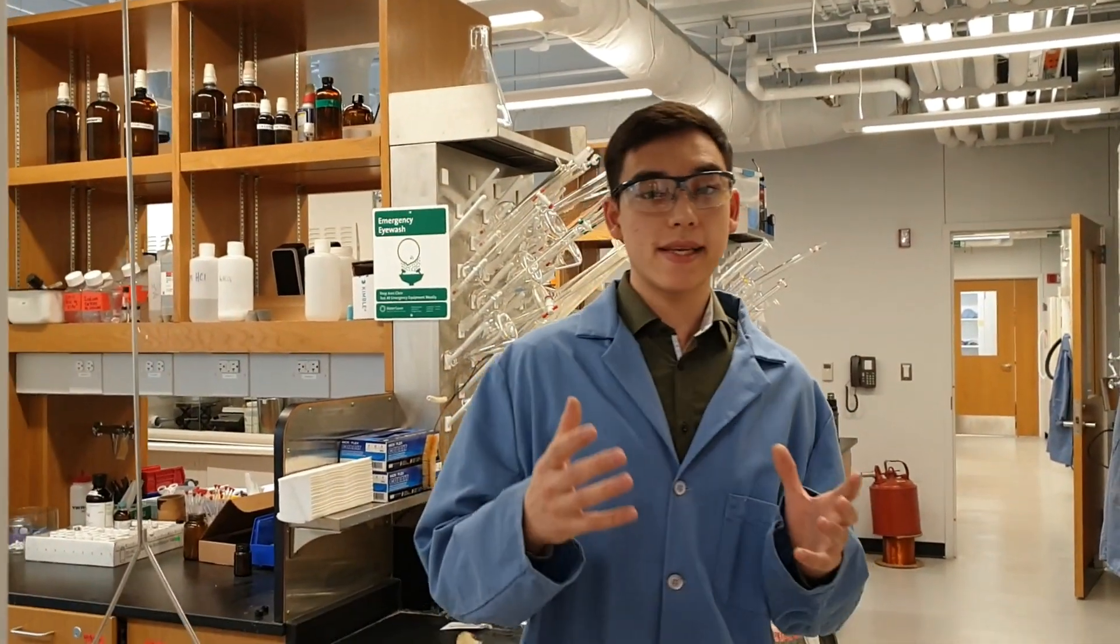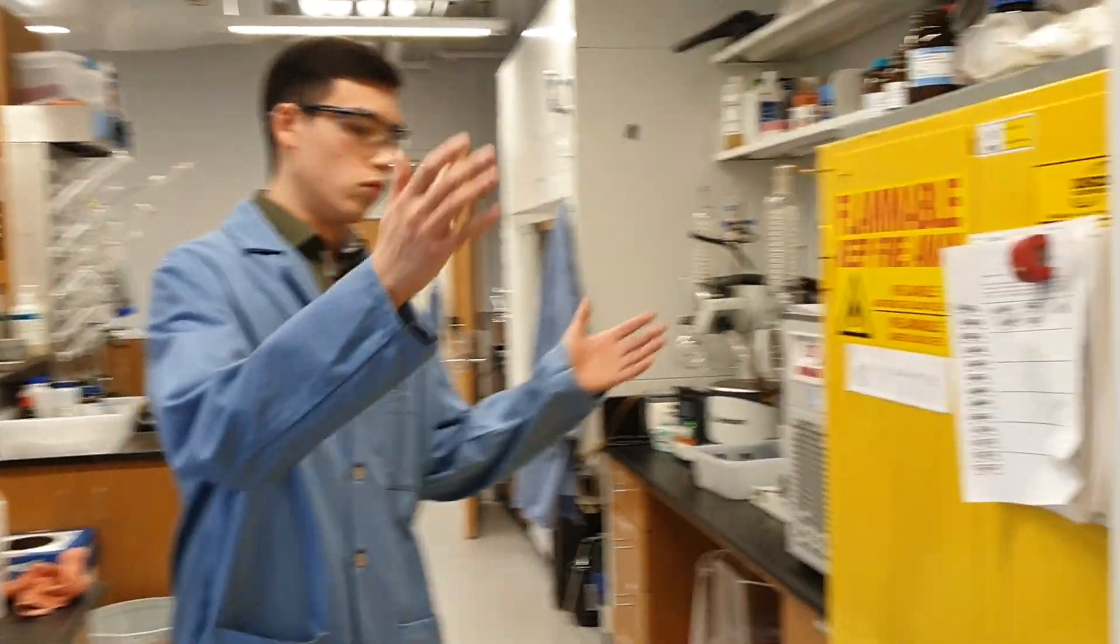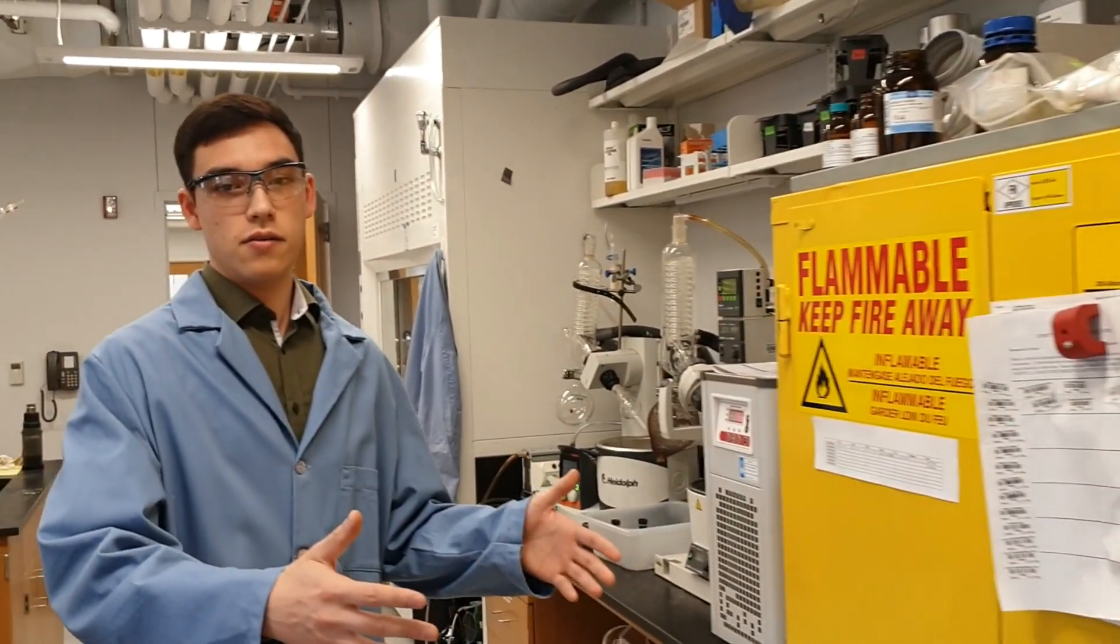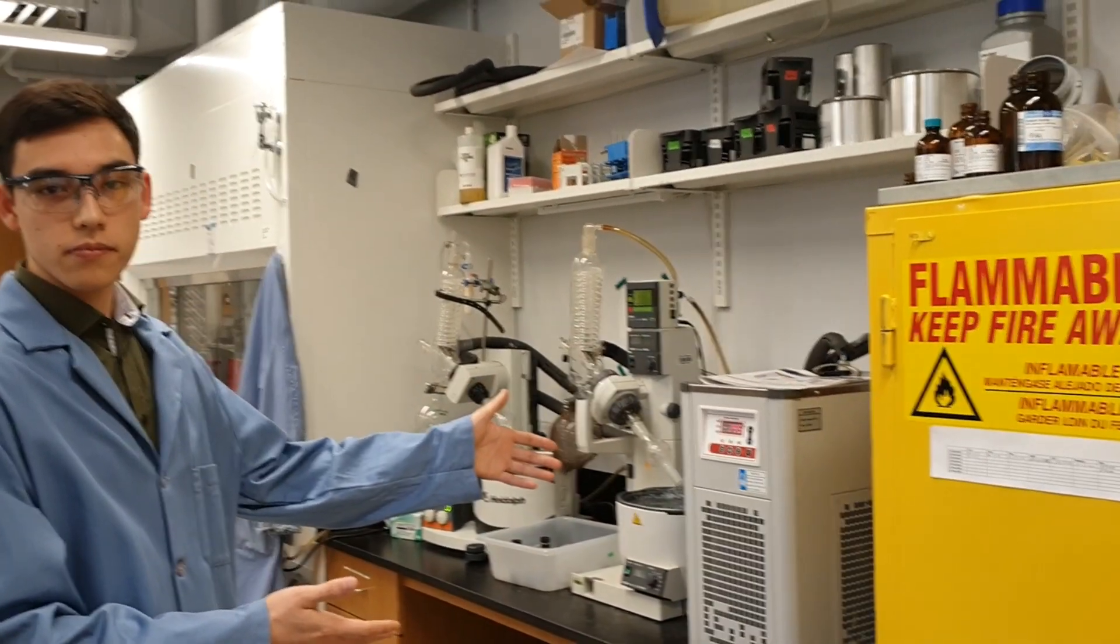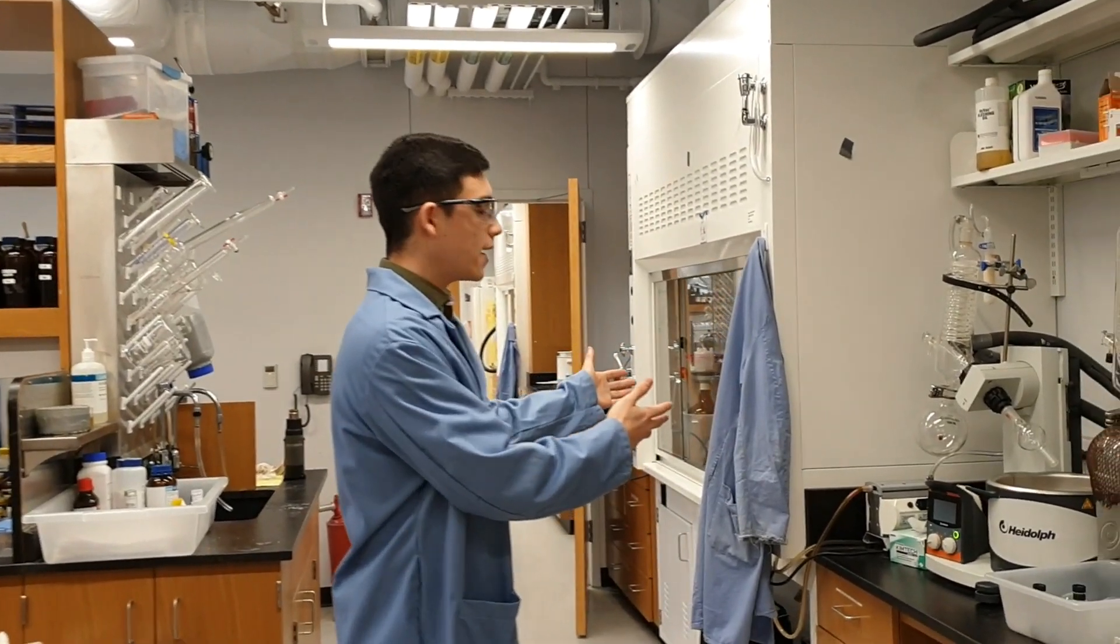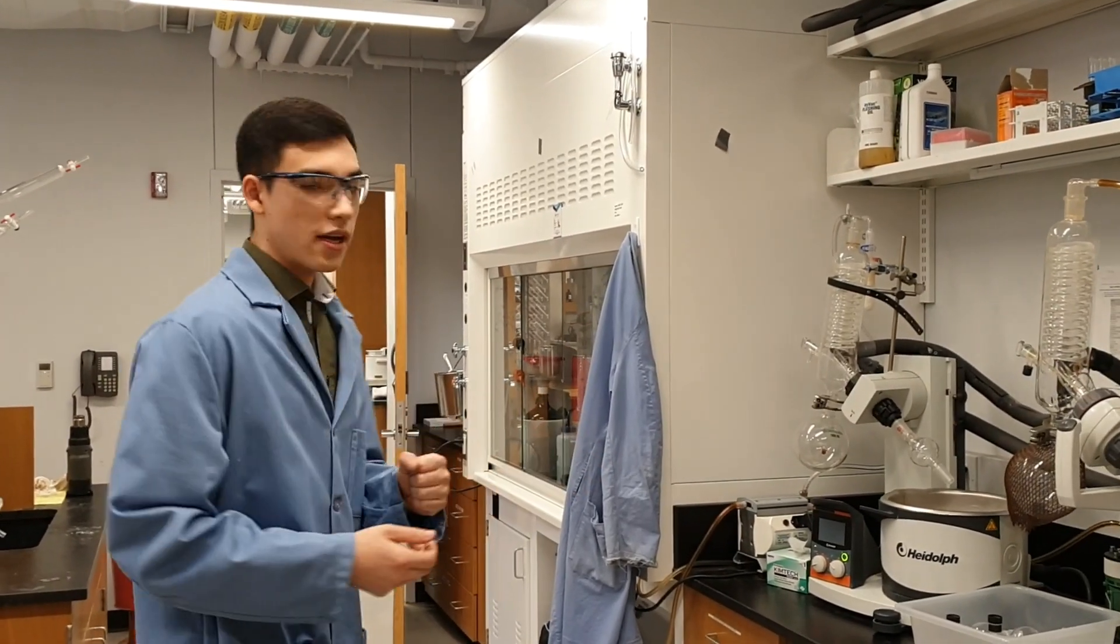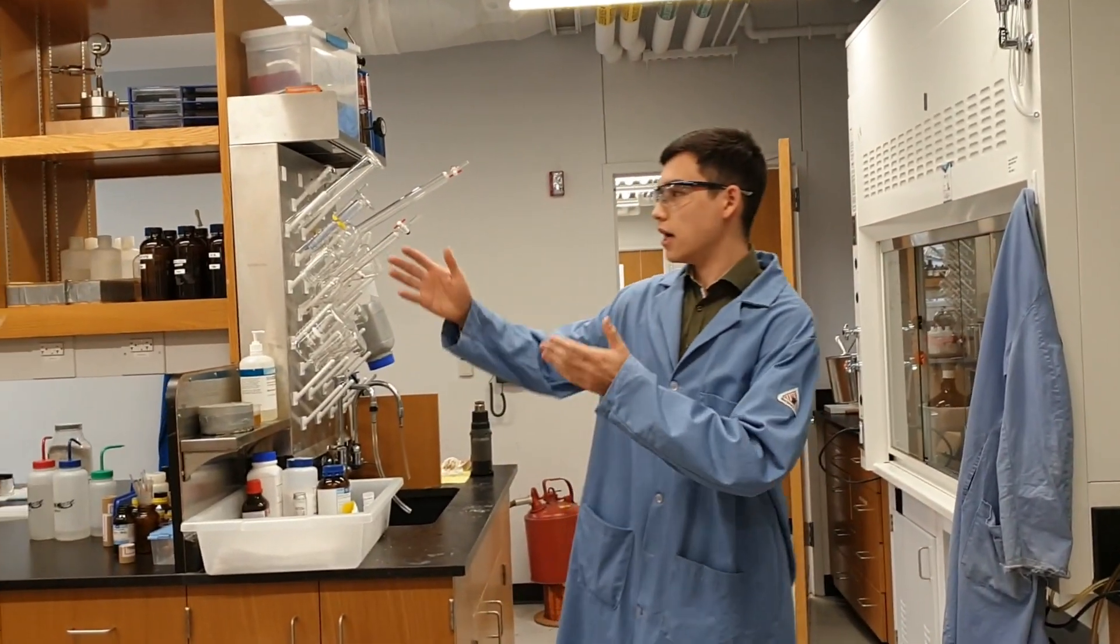Our lab is structured into four quadrants which are basically similar to this quadrant here. Every quadrant has their own fridge, own solvents. We have our rotovaps with a chiller, and every lab has five fume hoods. One fume hood is on the side and four other fume hoods are in that space.